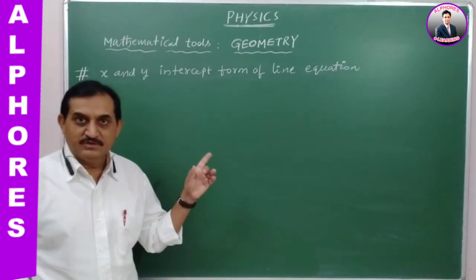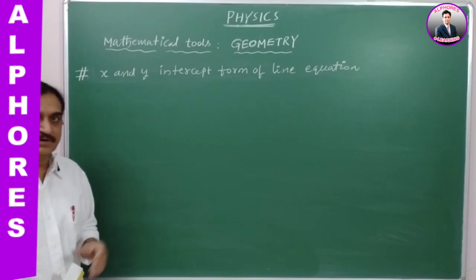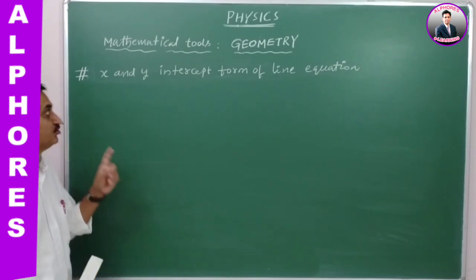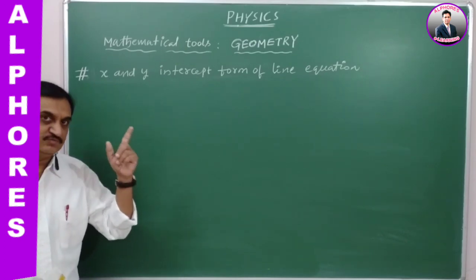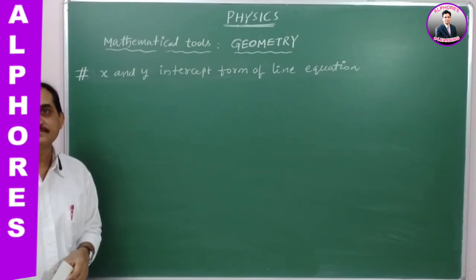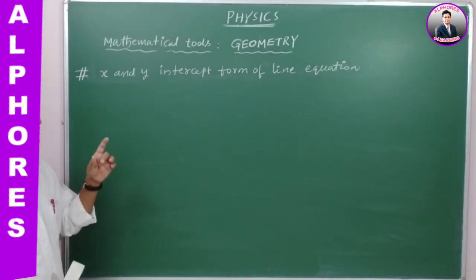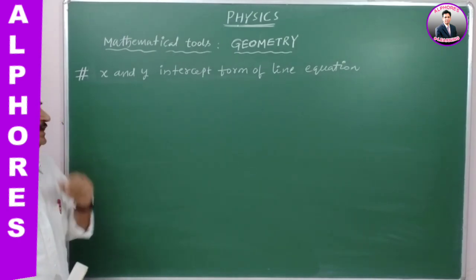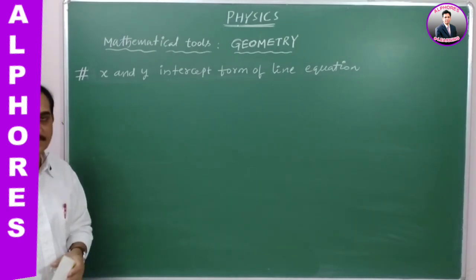And now, this is again a line equation, but with two intercepts — X and Y. So the equation of line with X and Y intercept form.